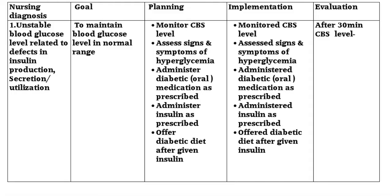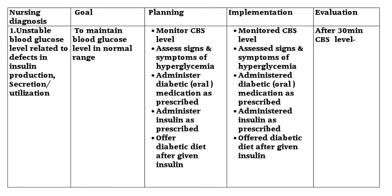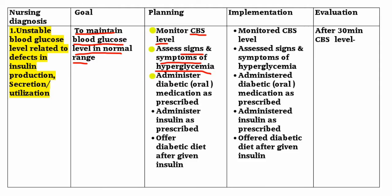Nursing Diagnosis No. 1: Unstable blood glucose level related to defects in insulin production, insulin secretion, and insulin utilization. Goal: to maintain blood glucose level in normal range. Planning: assess signs and symptoms of hyperglycemia, administer diabetic medication as prescribed, administer insulin as prescribed, and offer diabetic diet after giving insulin.